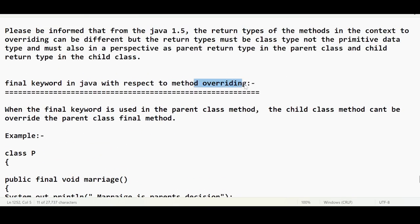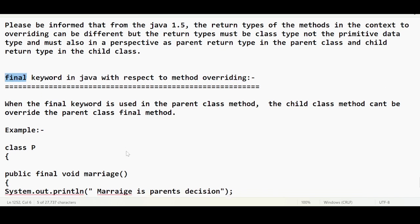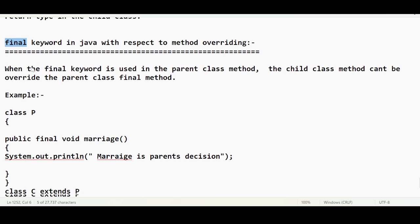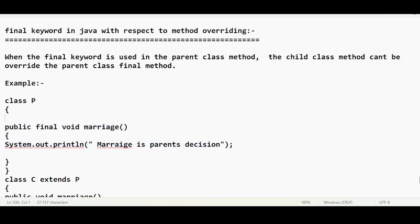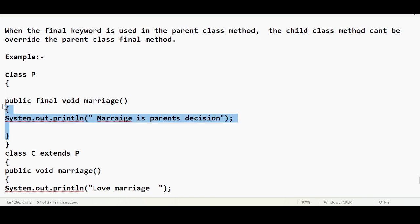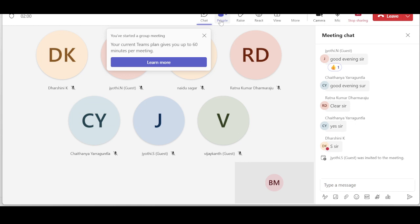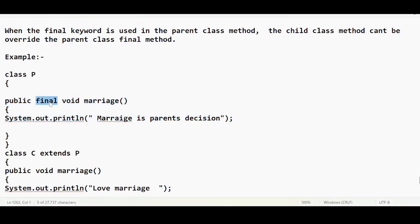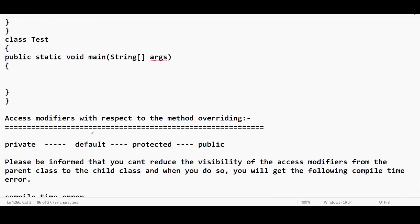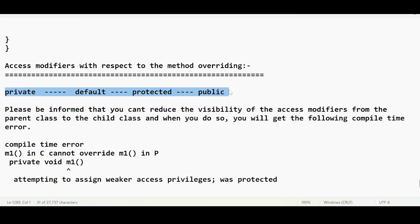We also discussed method overriding with respect to the final keyword, and we have seen so many cases to understand this functionality. The moment you use the final keyword, you cannot actually override a final method. It means you are placing a restriction such that this method cannot be overridden. We also discussed many examples on top of these access modifiers with respect to overriding.